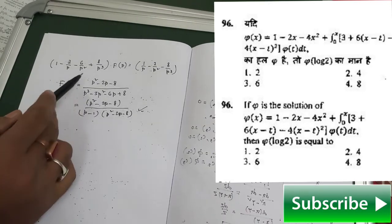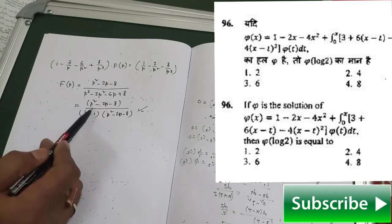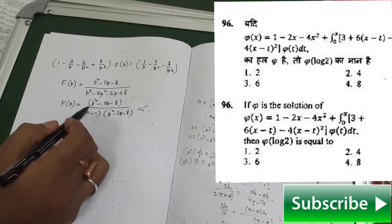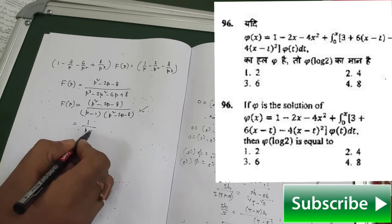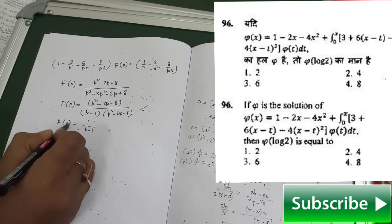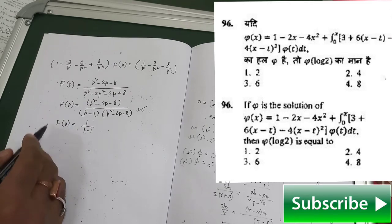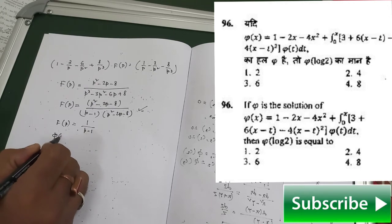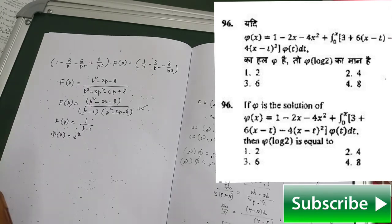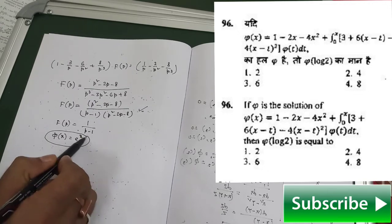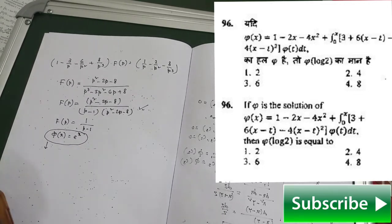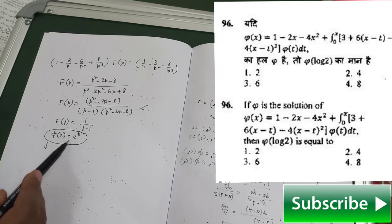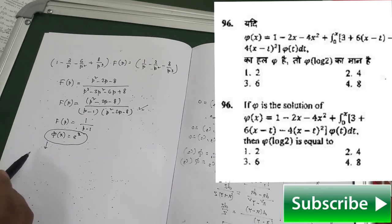After simplifying, you will find that F(p) reduces nicely — two parts cancel out — and you get F(p) = 1/(p−1). Taking the inverse Laplace transformation gives φ(x) = e^x. Observe how easily we obtained the expression for the unknown function φ(x) by using Laplace transformation — it is actually a magic trick.